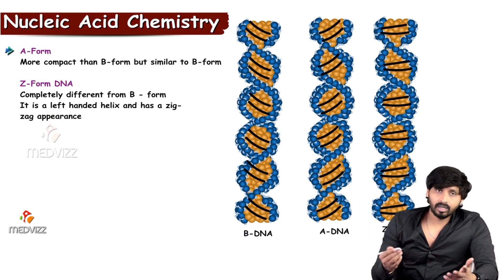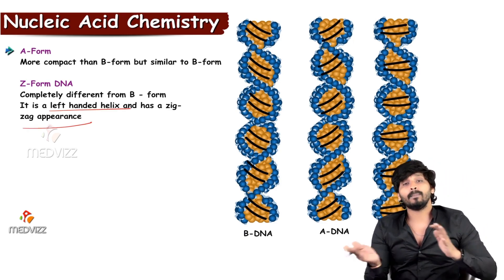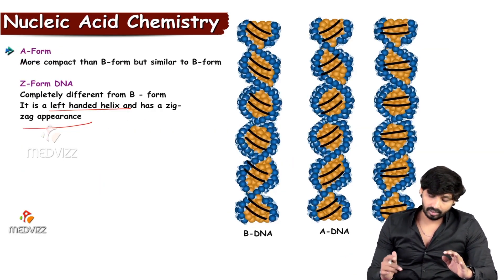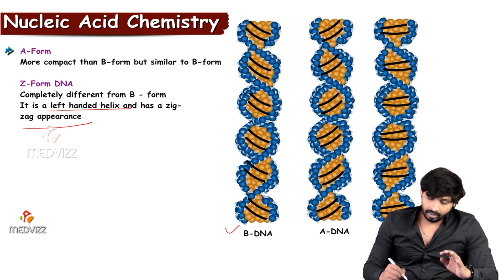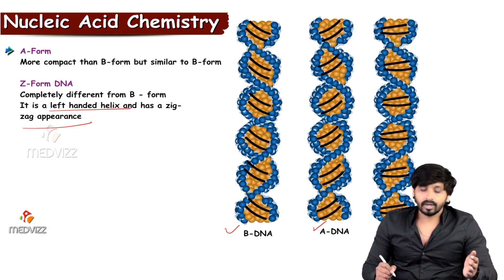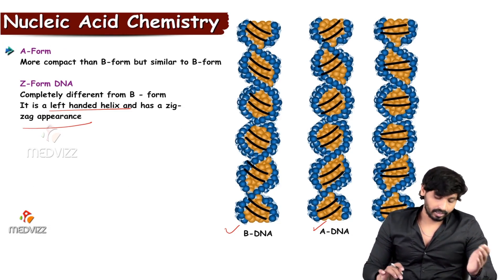It is completely different from B form of DNA. The major difference is it is a left-handed helical one and zigzag in nature compared with A and B forms. You see here the difference: B DNA is the commonest, A DNA is similar to B form, and Z DNA is left-handed helical and zigzag in nature.